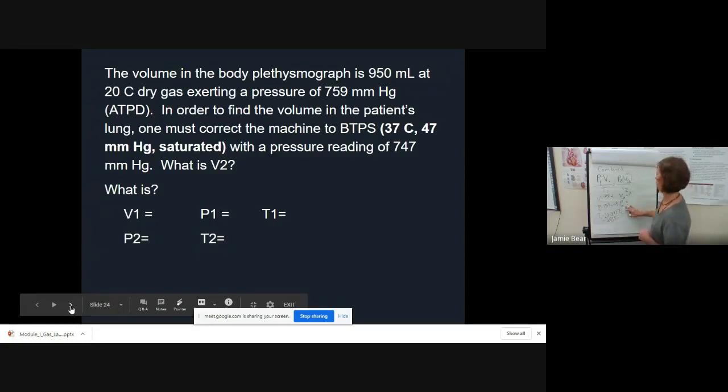V2 is what we're solving for. P2 now is set at 747 millimeters of mercury, but it's body temperature pressure saturated. When it's saturated, we have to take out that extra water vapor pressure. It gives it to us right there minus 47 because that is the water pressure at 37 degrees. 700 is our new P2. T2 is BT, that stands for body temperature. 37 degrees Celsius plus 273 is 310 Kelvin.